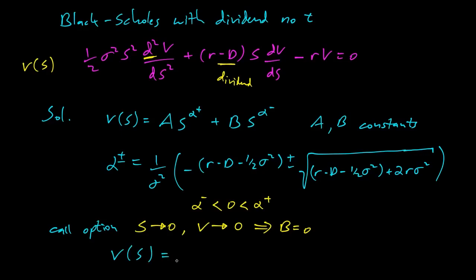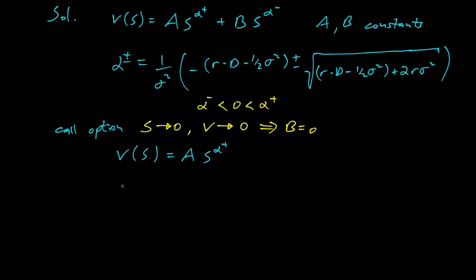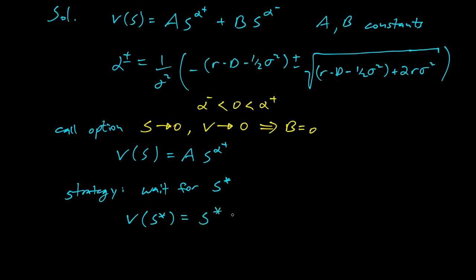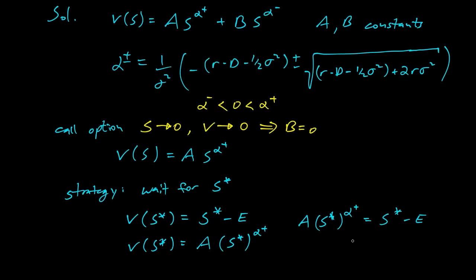For a call option, as S goes to zero the option becomes worthless. Since alpha-minus is negative, S to the alpha-minus blows up as S approaches zero — unless B equals zero. So B must be zero, leaving V(S) equals A S to the alpha-plus. Our strategy is to wait for some preset price S-star and then exercise. At exercise, the payoff is S-star minus E (the strike price), and continuity requires A S-star to the alpha-plus equals S-star minus E.